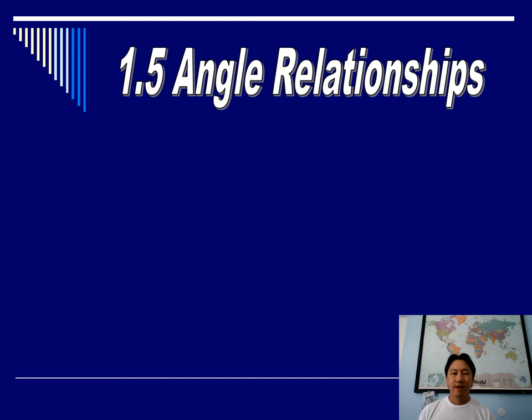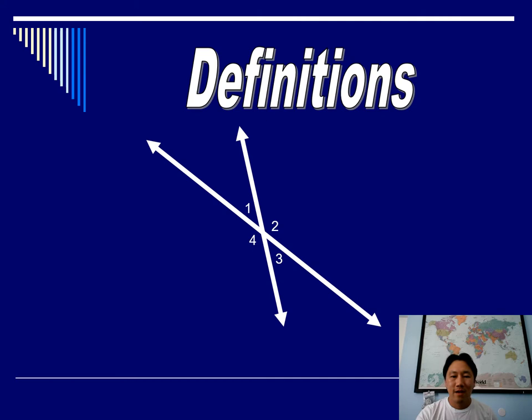Today we are going to do 1.5 Angle Relationships. Let's go ahead and introduce some vocabulary terms. In the picture there are basically two straight lines that intersect each other, and when they intersect a whole bunch of angles are formed. We're going to introduce some vocabulary based on the relationships those angles have.